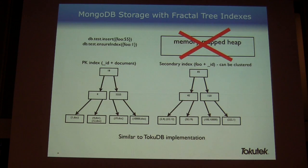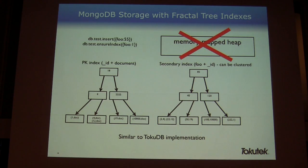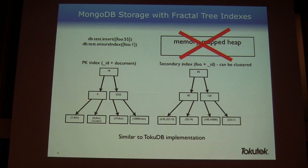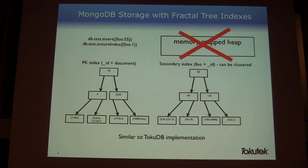What we're working on is removing that heap. Just like we did with TokuDB for MySQL, in the primary key index we'll still maintain the document _id but actually store the document itself clustered into the primary key. Secondary indexes will store the ID value and do the same thing as MySQL — when you look something up by secondary index, it jumps over to the primary key to get its value. The result is that rather than two indexes and a heap, in our world it's going to be two fractal tree indexes to store all the document data.